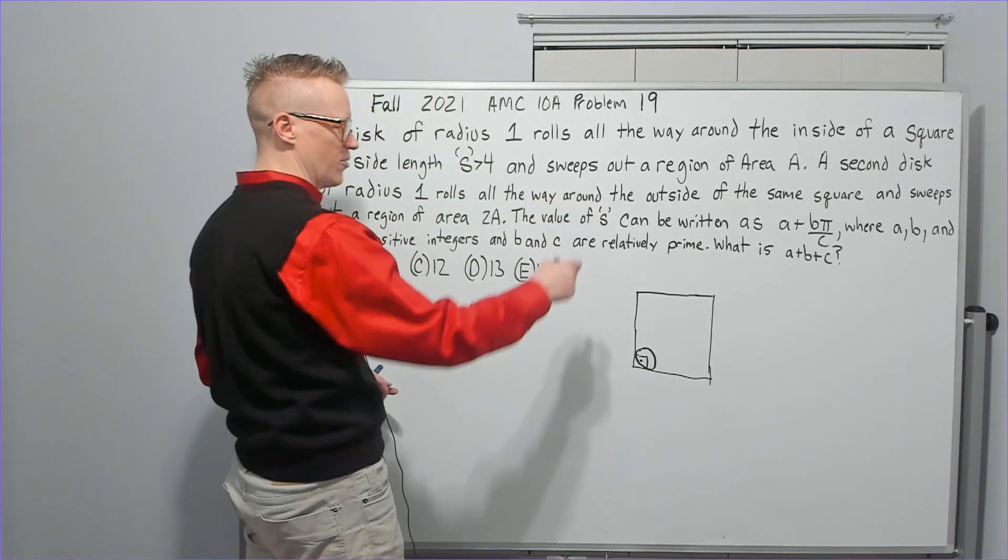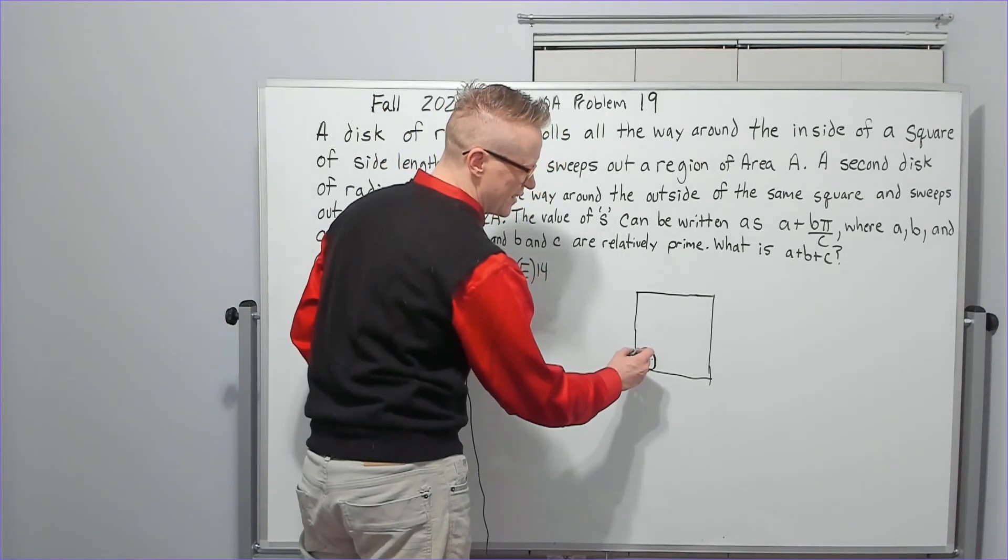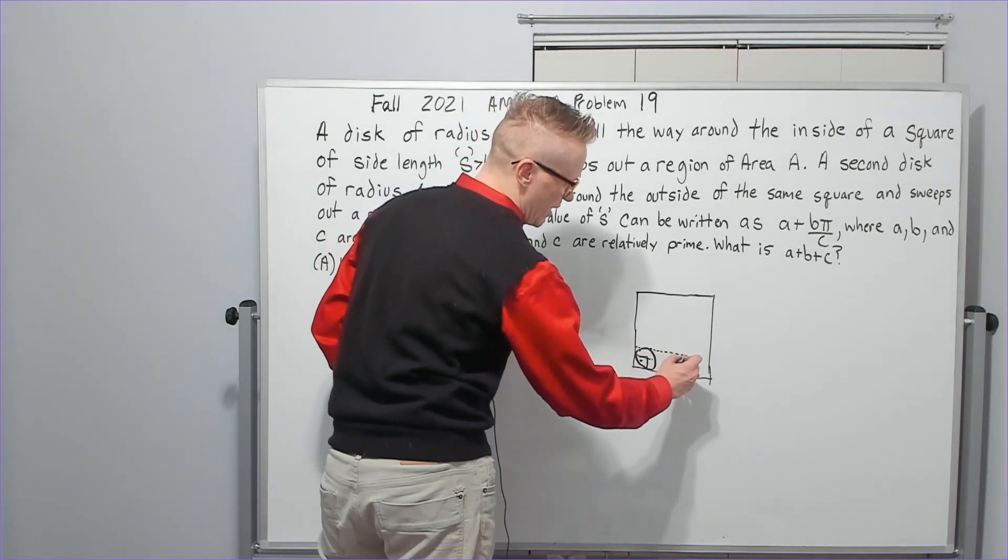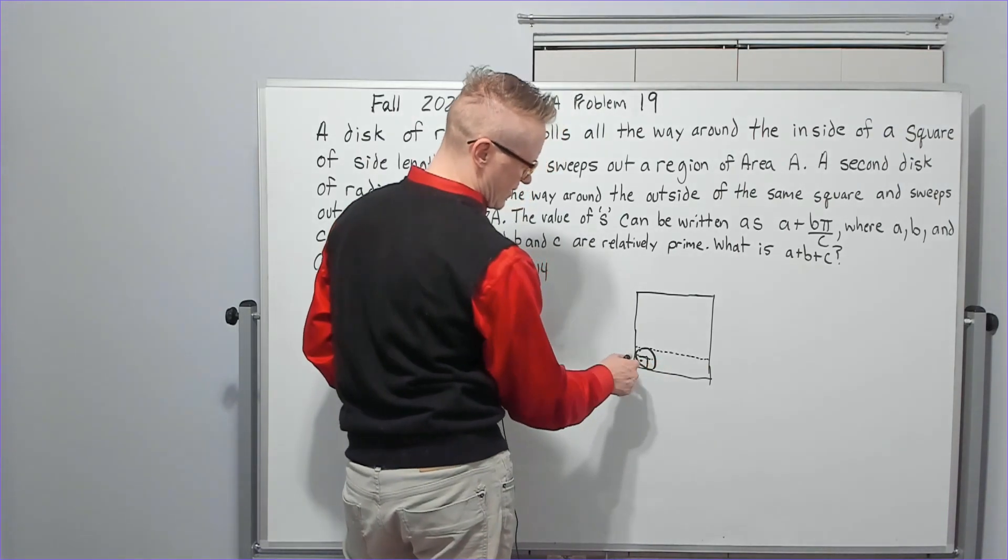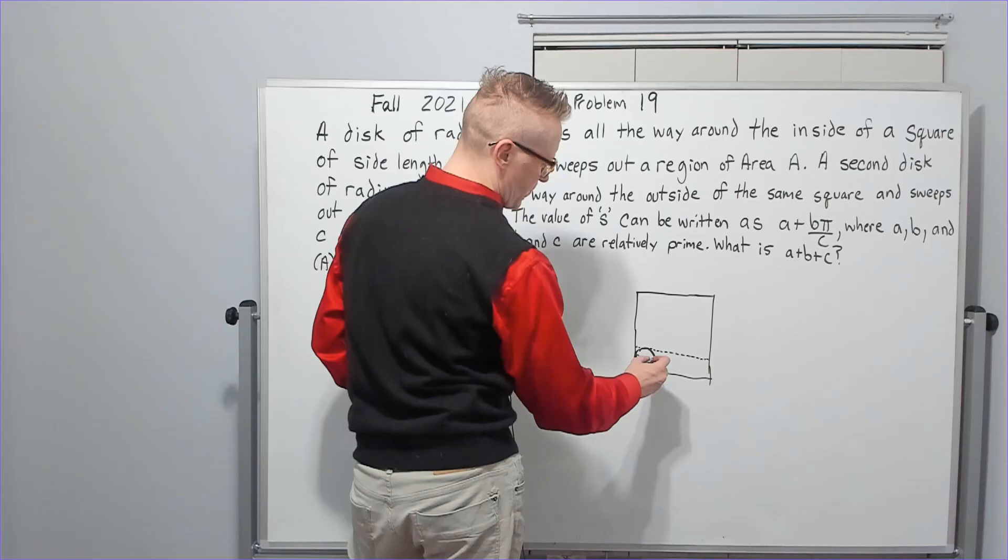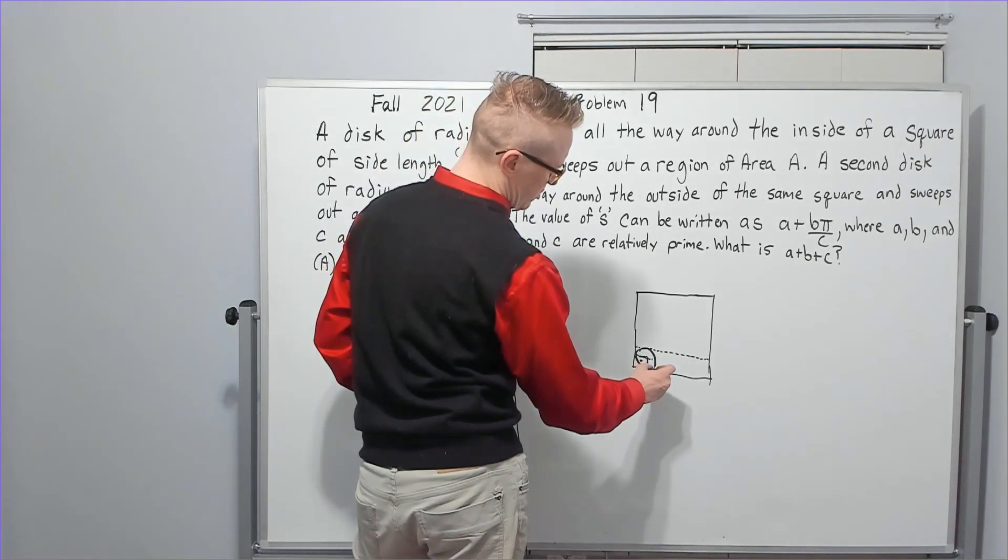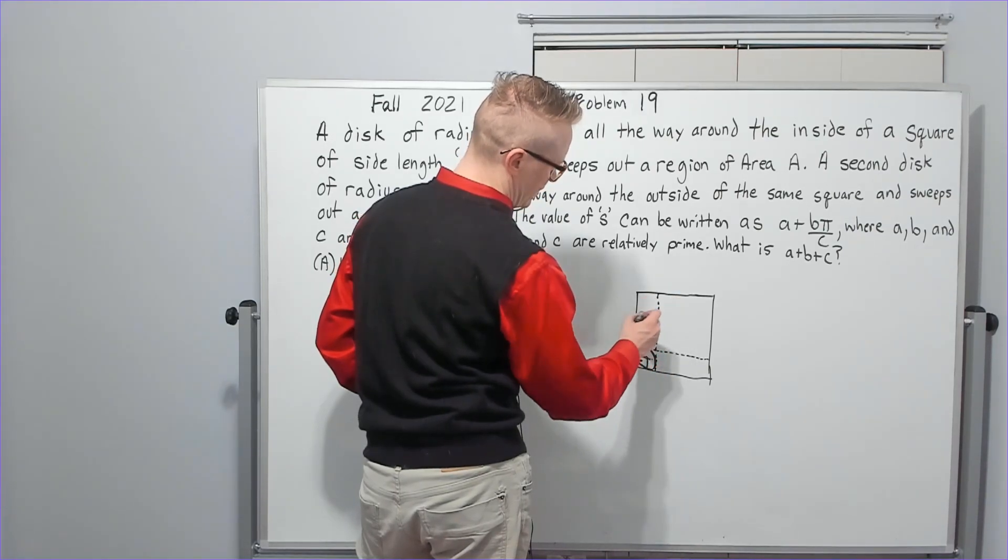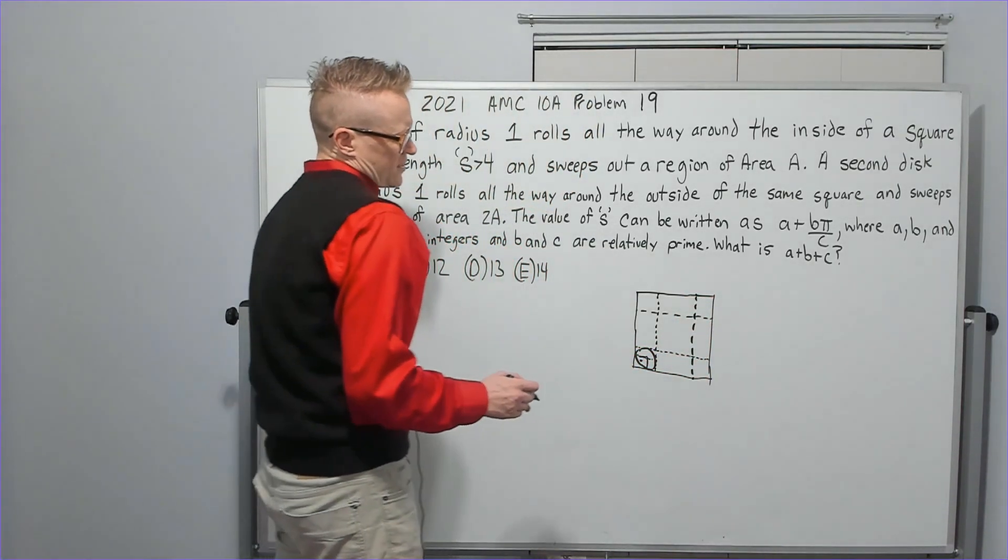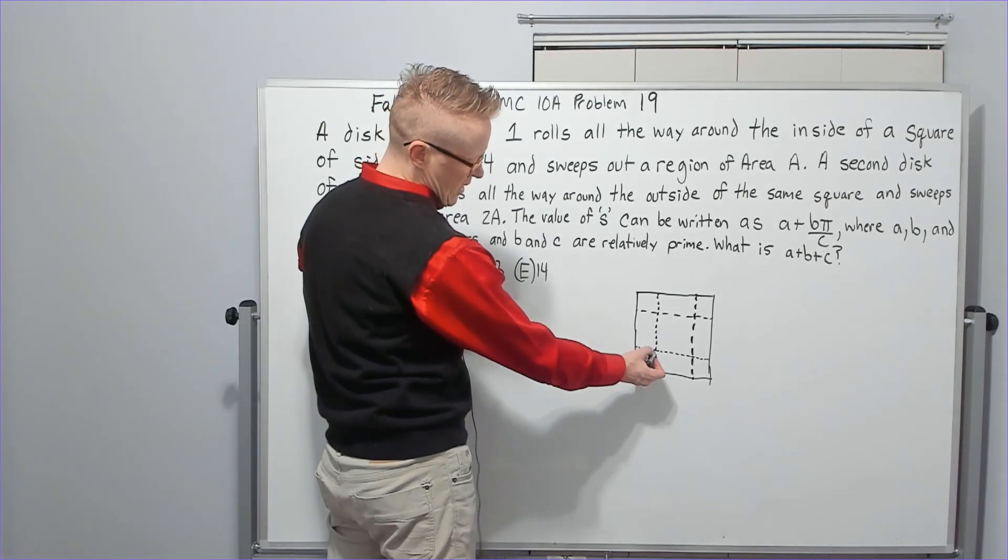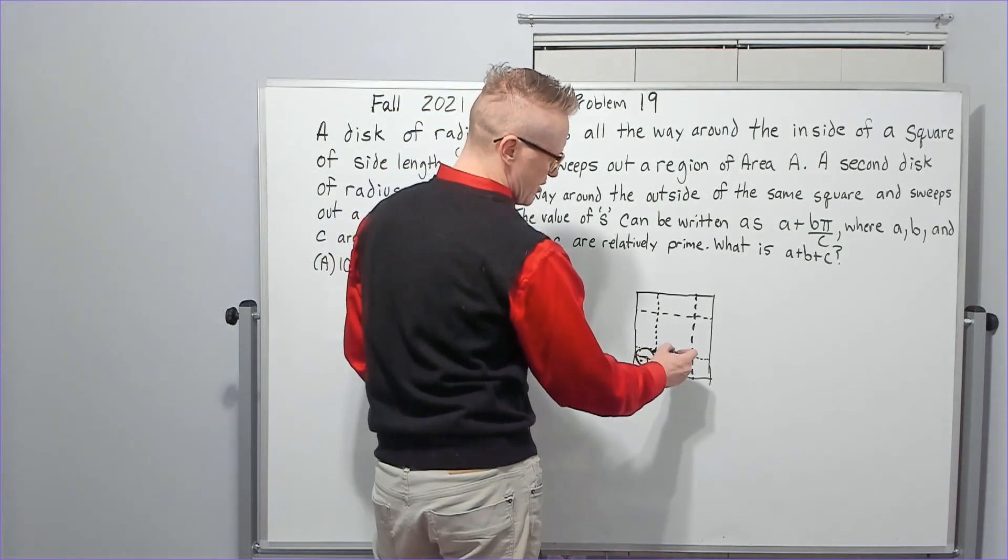Don't forget this quarter circle at the end right here. It's going to be in the corner, it's part of the area that it sweeps out. What happens as I run across this way is the center is going to go here, but the disc is actually going to be able to go all the way across to this way, so you're going to be a distance of two in. Now when I go up this way you're also going to be able to go up there, and then similarly here and similarly here.